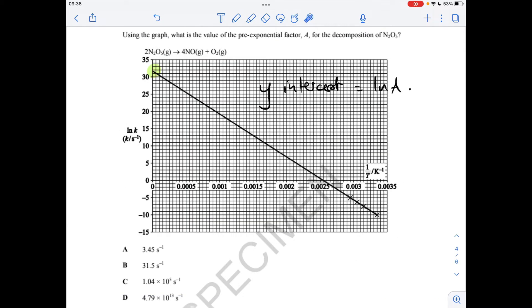Another Arrhenius question. This time we're going to use the y-intercept to get A, the pre-exponential factor. So again, from the logarithmic form of the Arrhenius equation, the y-intercept tells you what the ln of A is. So the ln of A is 31.5. So A is e to that number, which comes out at 4.79 times 10 to the 13. So it was option D.